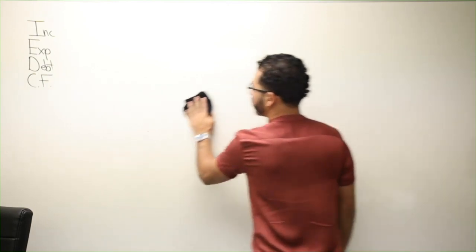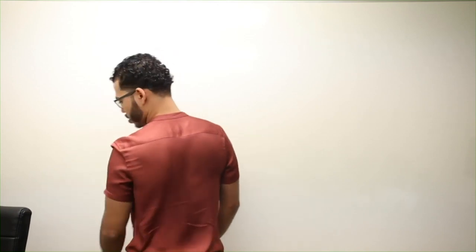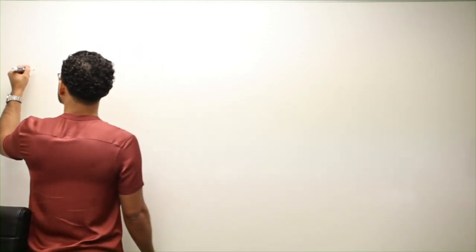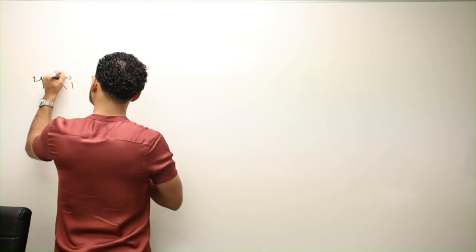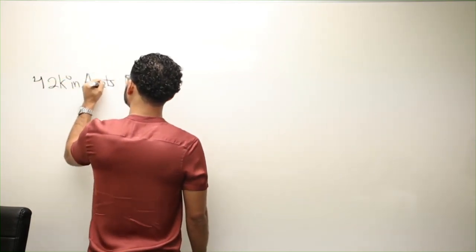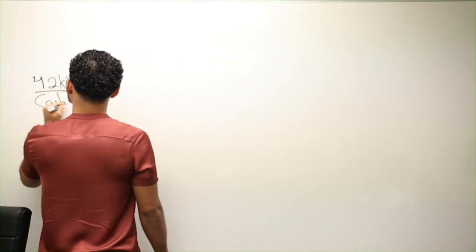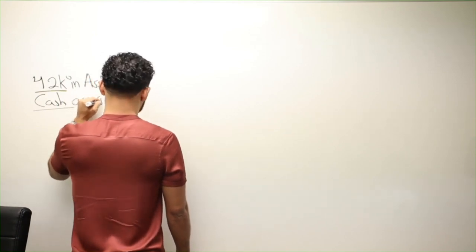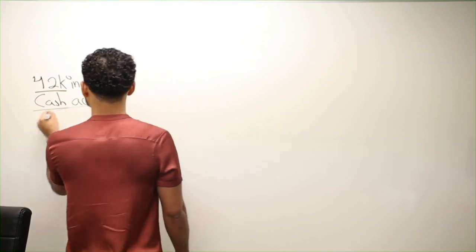He has $42,000 in assets. We just don't know what that actually means. That could be, I don't know if that's all cash accessible. Is it accessible? I don't even think I spelled accessible right. I just started writing crazy.